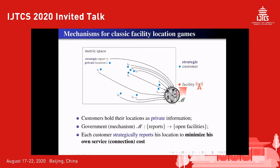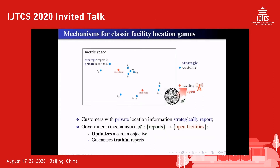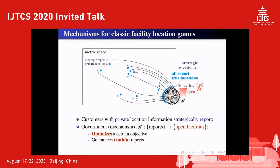Specifically, after receiving reports from all agents, the government uses a mechanism to map the reports to some locations for building facilities. The government or mechanism is to optimize a certain system objective, such as minimizing the total cost of all agents or minimizing the maximum service cost among all agents. It should be guaranteed that truthfully reporting is an optimal strategy for every agent to minimize their own service cost, meaning that all b_i equal r_i.